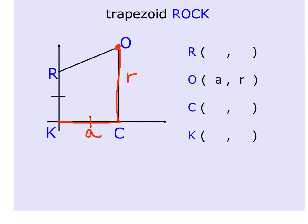When I see these marks, that means they're congruent, so I know that that is a. And I can then fill in R, C, and K, the ordered pairs.